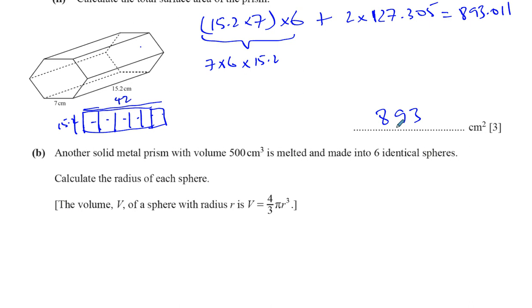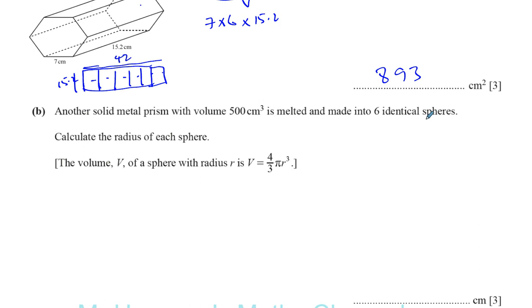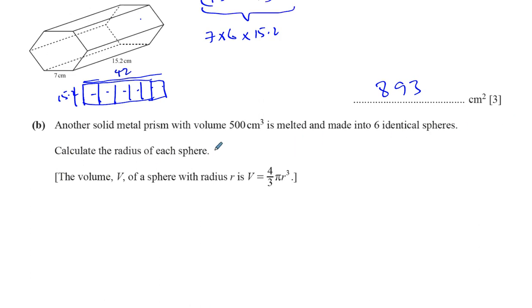Another solid metal prism with volume 500 centimeters cubed is melted and made into six identical spheres. Calculate the radius of each sphere. Well, we know that the total volume of those spheres is 500 centimeters cubed. So we've got six times the volume of one of them is four over three times pi times r cubed. And we know the total volume is 500.